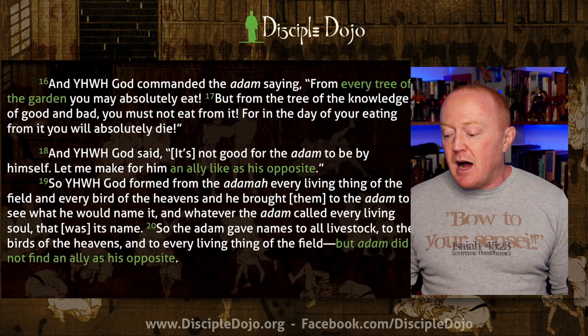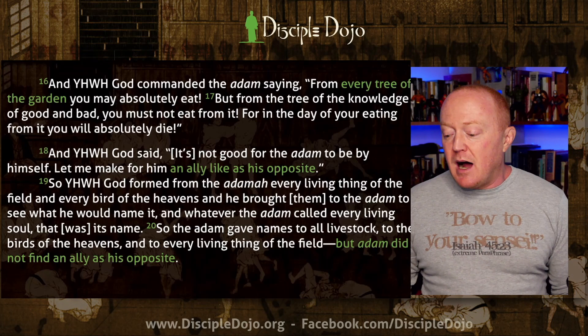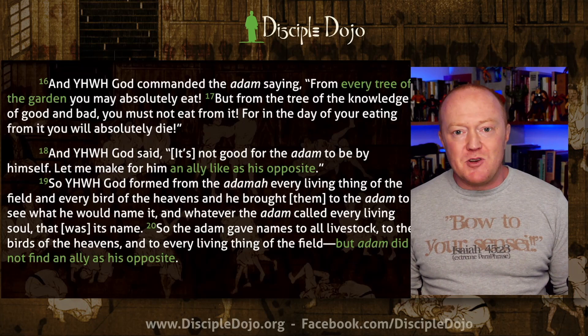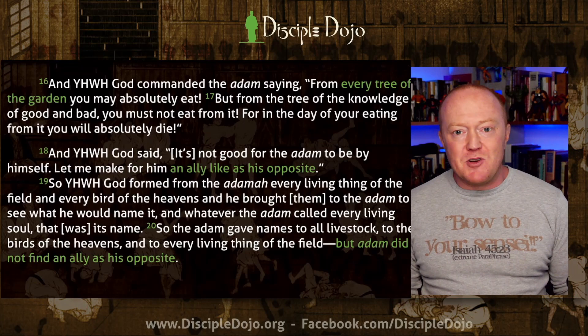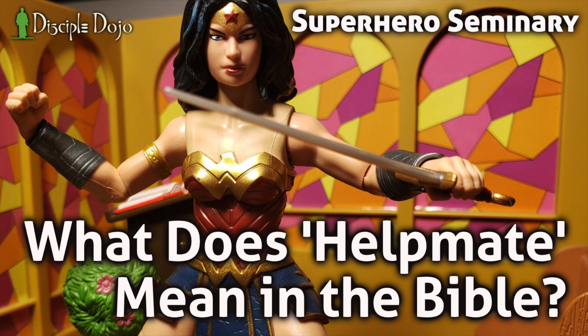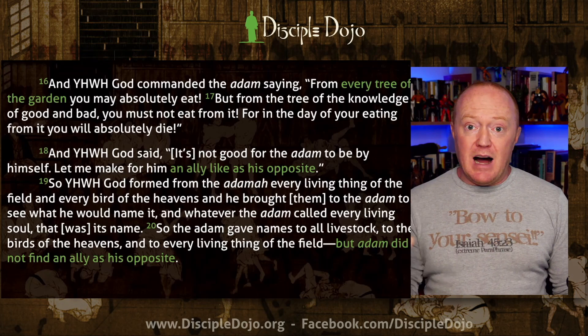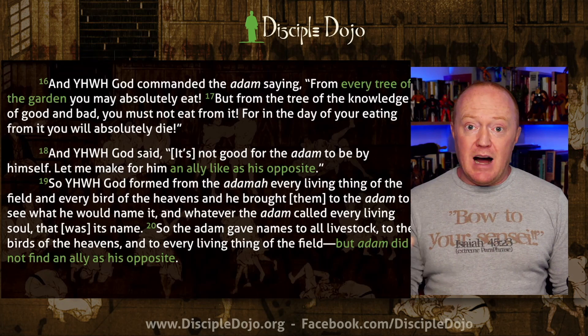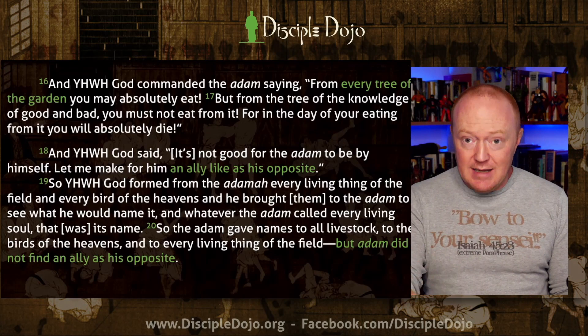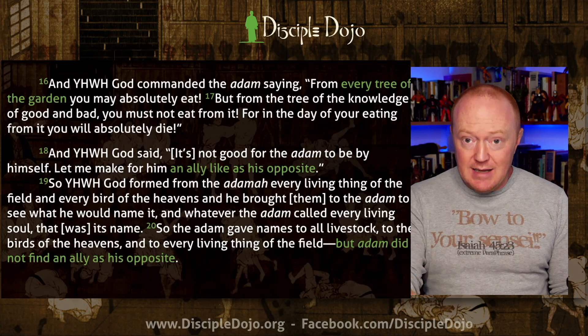Then Yahweh God said, 'It is not good for the adam to be by himself; let me make for him an ally like as his opposite.' I've translated this literally — ezer kenegdo in Hebrew. It's been translated 'helper suitable for him' or 'help mate.' We've done a whole video on this — check out the Superhero Seminary episode where Wonder Woman explains what ezer means. The bottom line: it means an ally, one who comes to the aid of another. It's used almost always either to describe God toward Israel or military aid — someone coming to help defeat an advancing army.